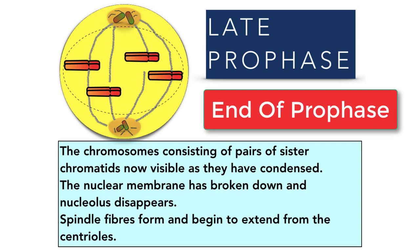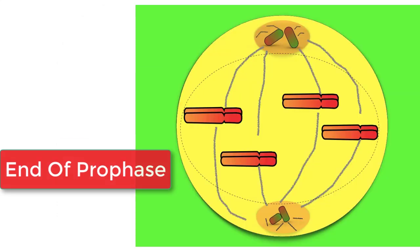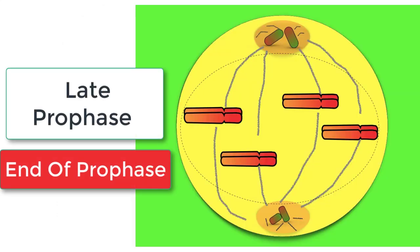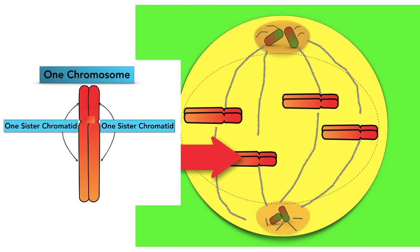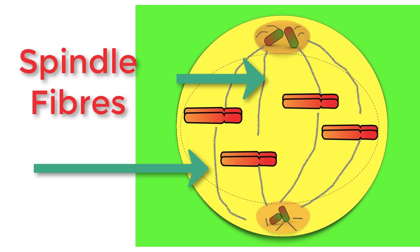In late prophase, the chromosomes — consisting of those pairs of sister chromatids — are now fully condensed and visible, the nuclear membrane has broken down, the nucleolus has disappeared, and spindle fibers have formed and extend from both centrioles through the cell. In the late prophase diagram, you can actually see chromosomes, each made up of a pair of sister chromatids, and the spindle fibers are fully visible extending from centrioles at both poles.